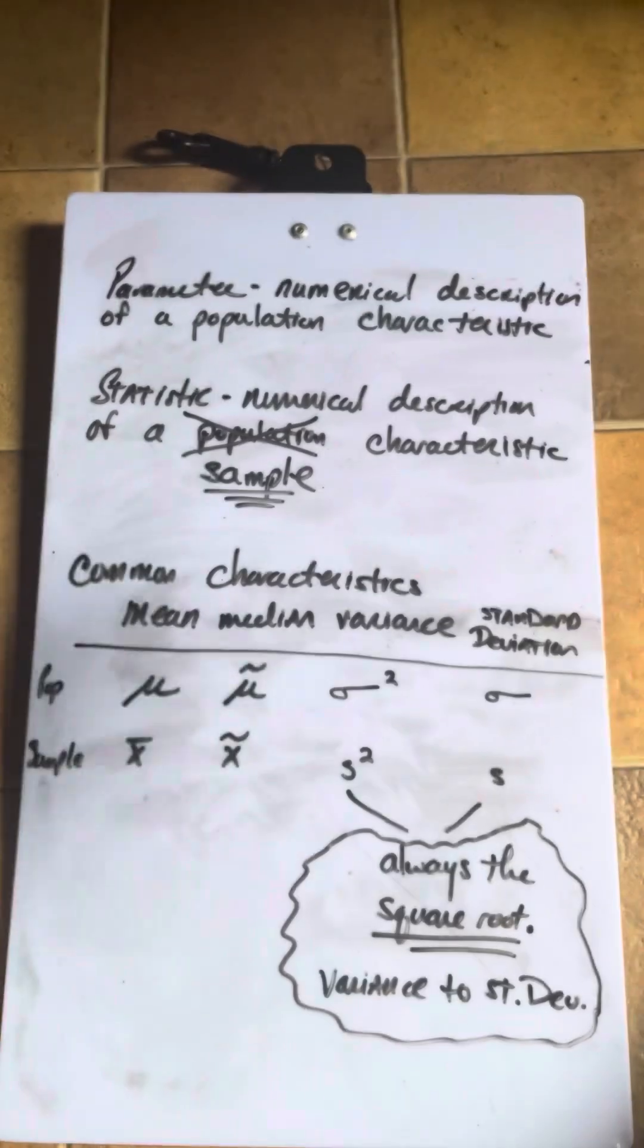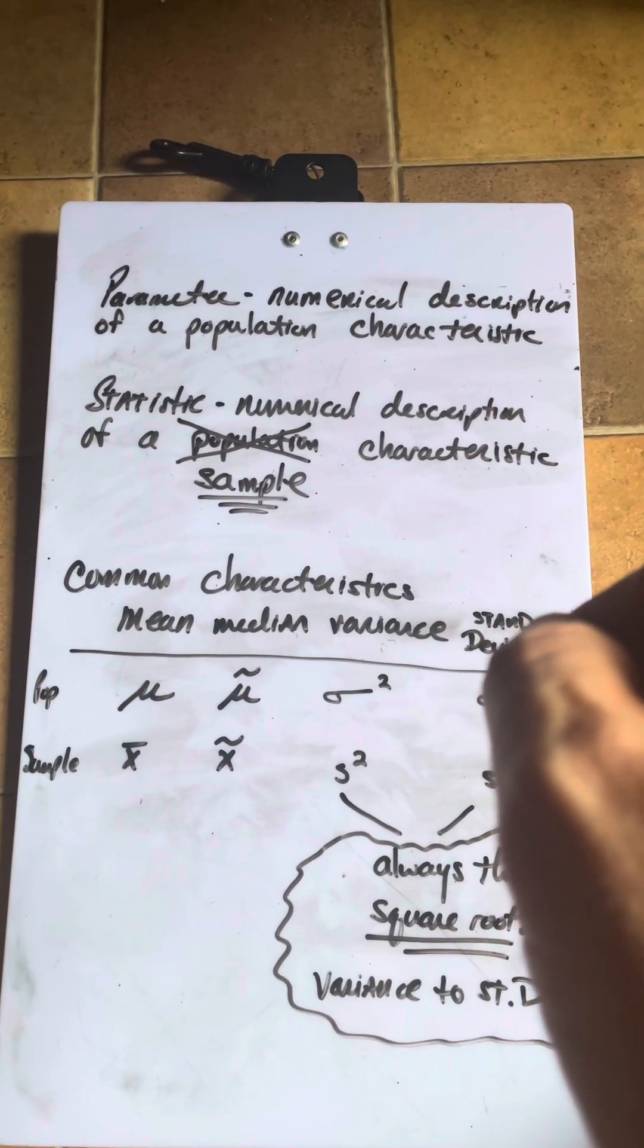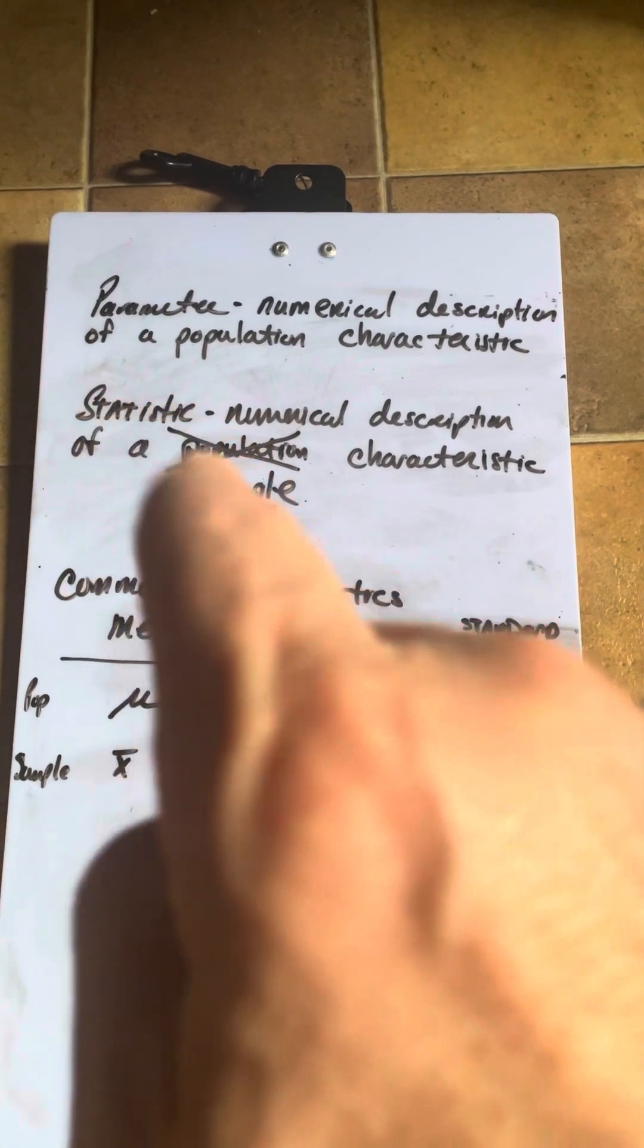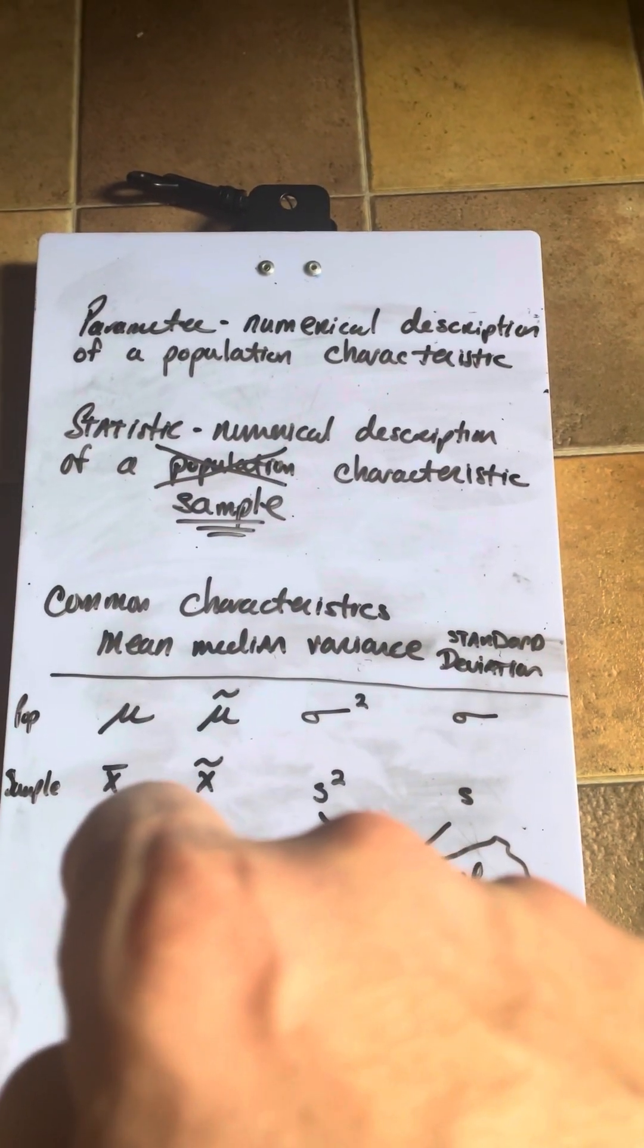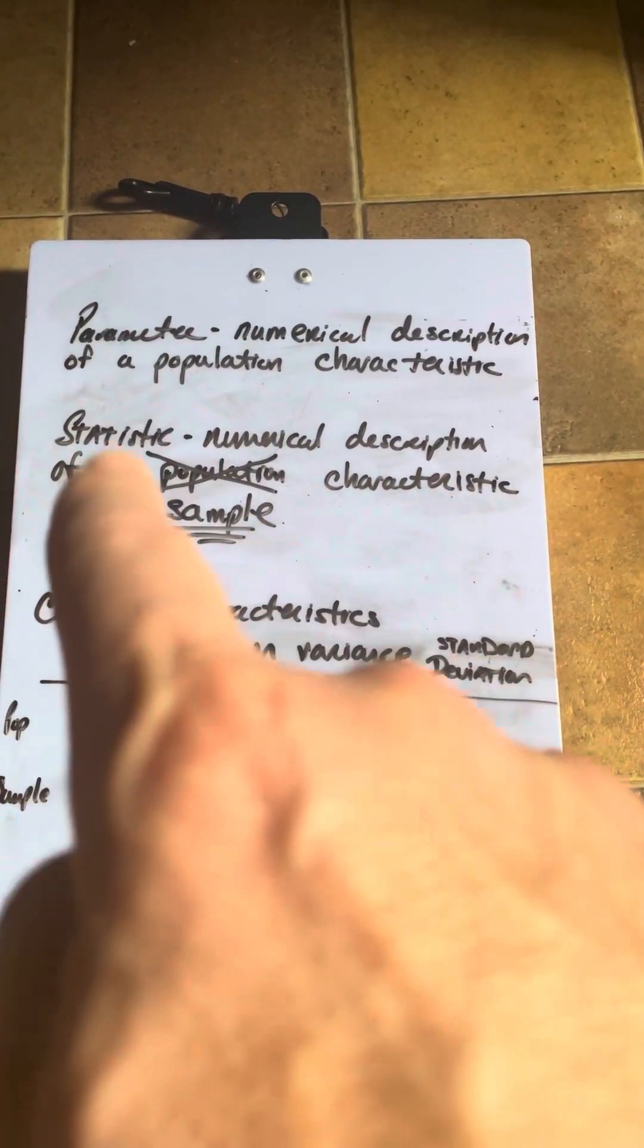So parameter, fortunately, is from a population and statistic is from a sample. And you'll notice I crossed off the word population in there for effect. So population, parameter, sample, statistic.